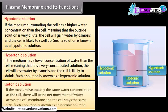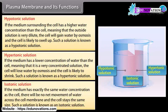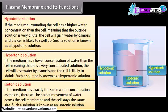Isotonic solution: If the medium has exactly the same water concentration as the cell, there will be no net movement of water across the cell membrane and the cell stays the same size. Such a solution is known as an isotonic solution.